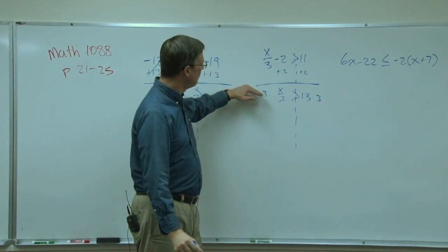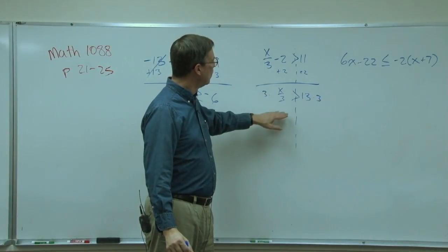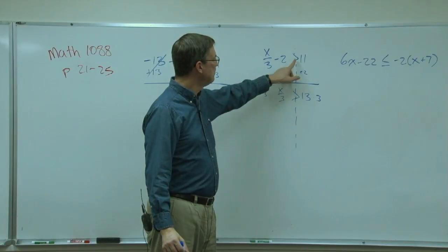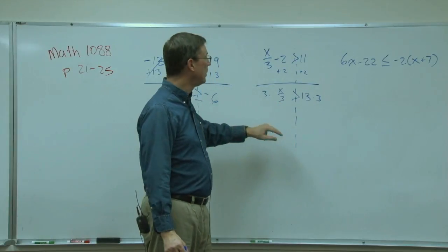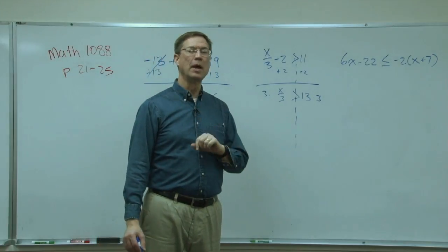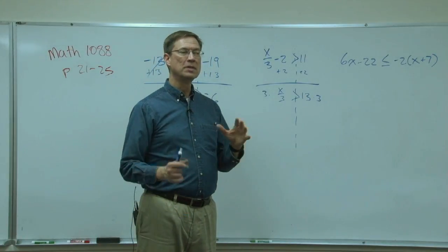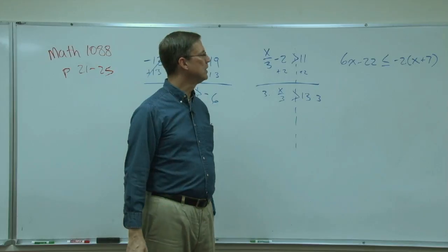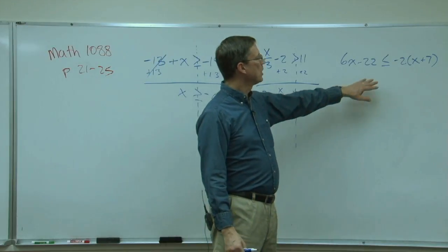And that way the three will cancel, we'll keep the x, keep the same symbol. If it's greater than, you keep greater than. If it's greater than or equal to, then you keep that little underline with it. It's kind of merging those two symbols together. This one is a lot more complicated. This is on page 25.